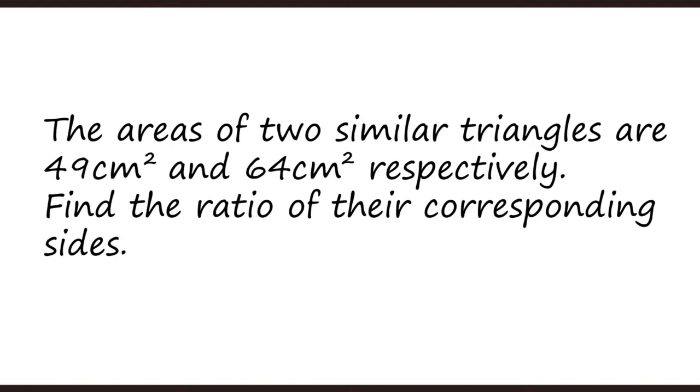Problem: The areas of two similar triangles are 49 cm² and 64 cm² respectively. Find the ratio of the corresponding sides. Since the triangles are similar, their sides are in the same ratio. The ratio of areas equals the square of the ratio of sides, so B1²/B2² = 49/64, giving B1/B2 = 7/8.